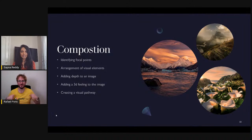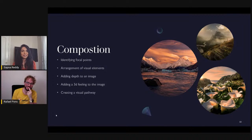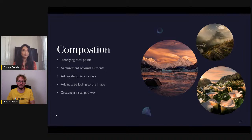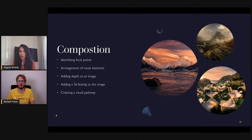All of these things — identifying focal points, arranging visual elements, adding depth, adding a 3D feeling — combine to create a visual pathway. After you've finished post-processing an image and you put it on your computer, consciously close your eyes, then open them and ask yourself: how is my eye traveling through the frame? Where does it enter, how does it go through, where does it land? Is it landing on the points I want the viewer to see? If not, you have not really completed your visual story.